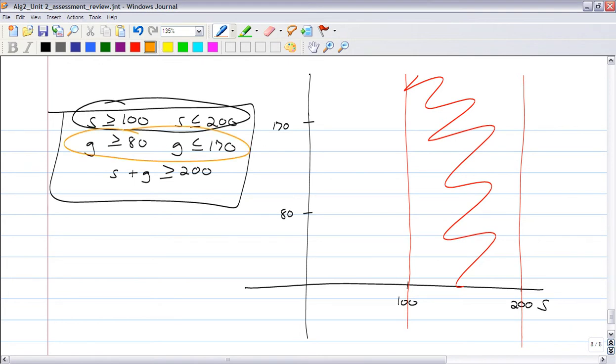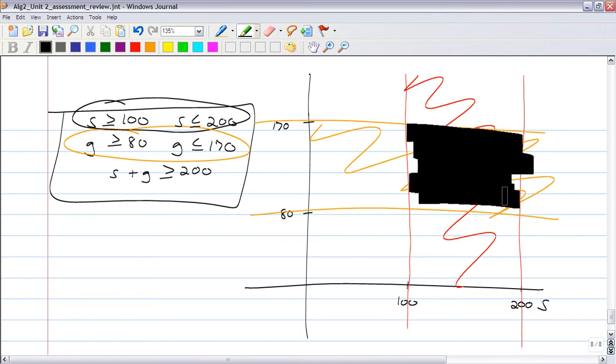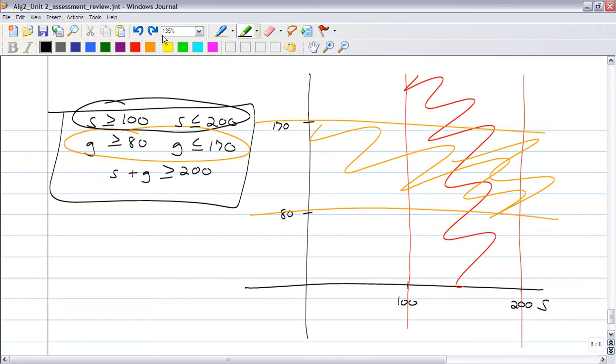And these two guys here, scientific being between 100 and 200, tells us that we're in this region. And these two guys here forces us to be in this band. So with just the first four constraints, we can already tell that we're going to be in this region right in here. But we've got one more, right? We've got kind of that diagonal line.